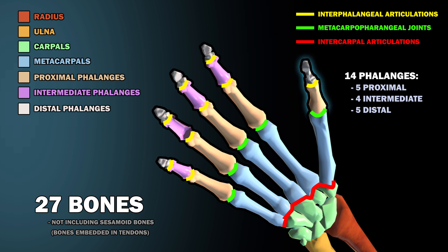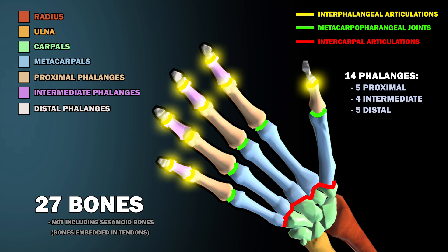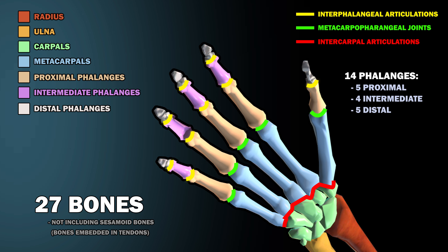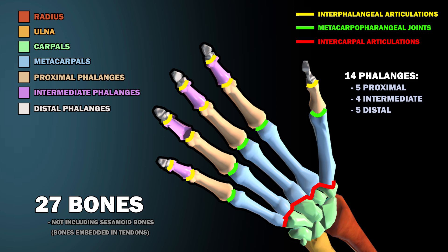Your thumb is the only finger that lacks an intermediate phalanx bone, mirroring your big toe's structure. The points of contact between the phalanx bones of each finger are called the interphalangeal articulations of the hand. Articulation is just a fancy word for joint.